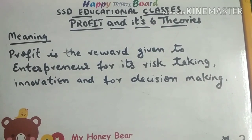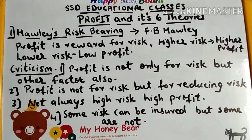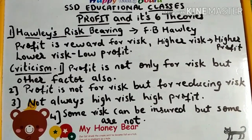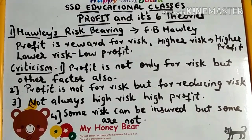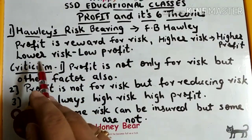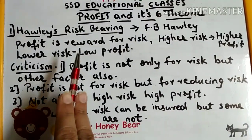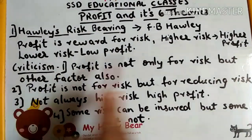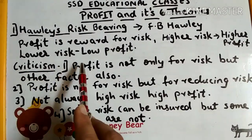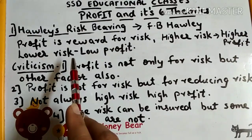Here are six theories of profit. The first is Howley's Risk Bearing Theory, made by FB Howley. They said profit is the reward for risk. If there is profit, there is risk bearing. Higher the risk, higher will be the profit; lower the risk, lower will be the profit.